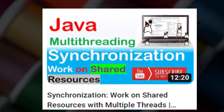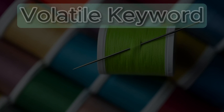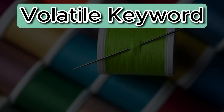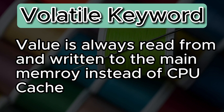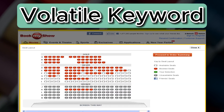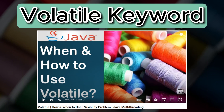Next, we have the volatile keyword. Think of it as a global announcement that everyone hears at the same time. In Java, making a variable volatile ensures all threads see the most up-to-date value. When a variable is declared volatile, its value is always read from and written to main memory instead of the CPU cache. For instance, a variable representing available seats in a cinema, if made volatile, ensures all threads are aware of the current seat count, so no two users can book the same seat.